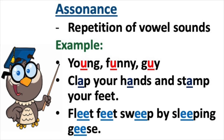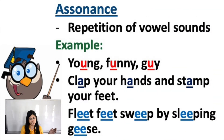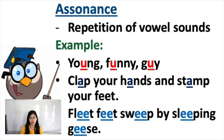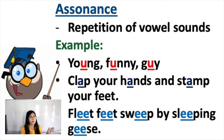Another sound device is assonance. Assonance is the repetition of vowel sounds, pertaining to vowel letters A, E, I, O, and U. For example: 'young, funny, guy' — it repeats the vowel U. Next: 'clap your hands and stomp your feet' — there's a repetition of the vowel letter A. Next: 'flip feet sweep by slipping' — it repeats the vowel letters E and I. As you can see, the letters are being underlined.